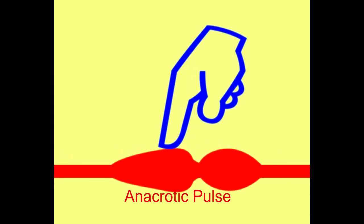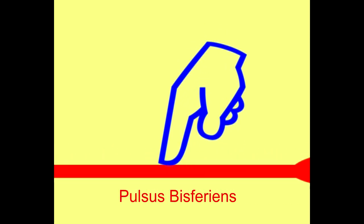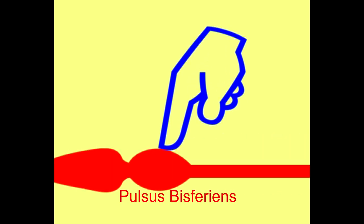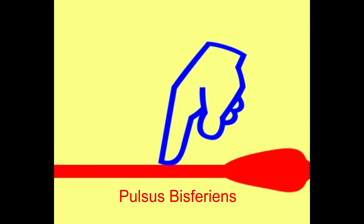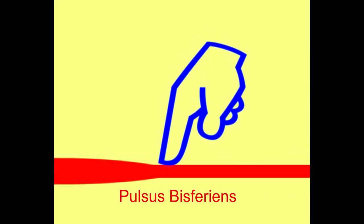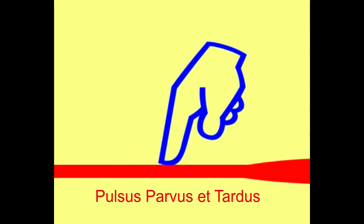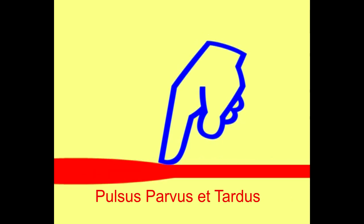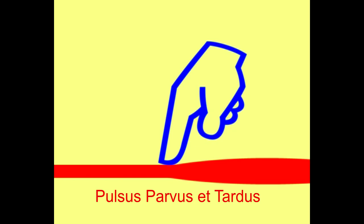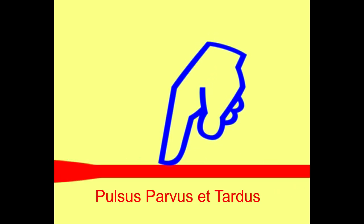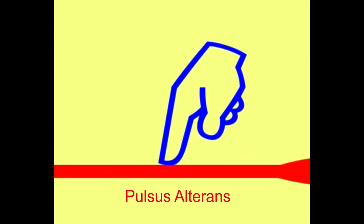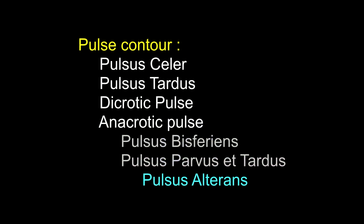Pulsus bisferiens is a twice-beating pulse with two peaks in each systole, seen in moderate aortic stenosis with severe aortic regurgitation. Pulsus parvus et tardus means a small volume pulse with slow rise and slow fall — characteristic of severe aortic stenosis. Pulsus alternans, i.e., alternately small and large volume beats in left ventricular failure, suggests poor prognosis — severe damage and fatigue of the left ventricular muscle.